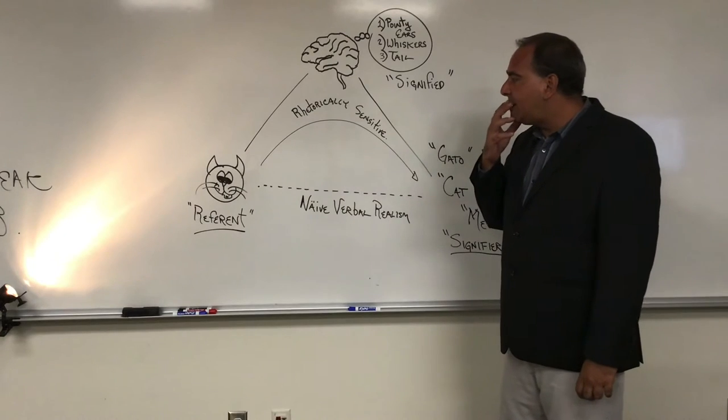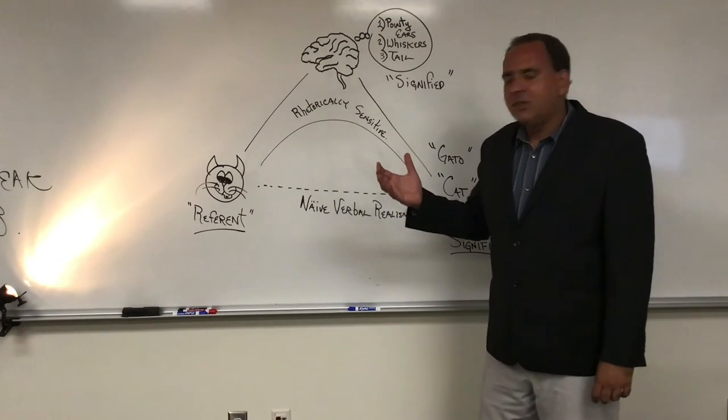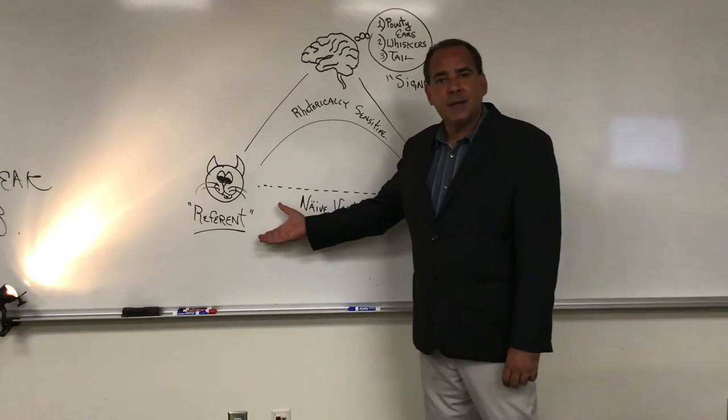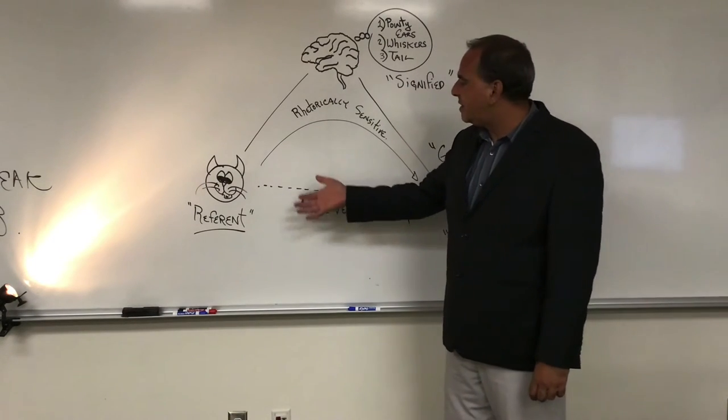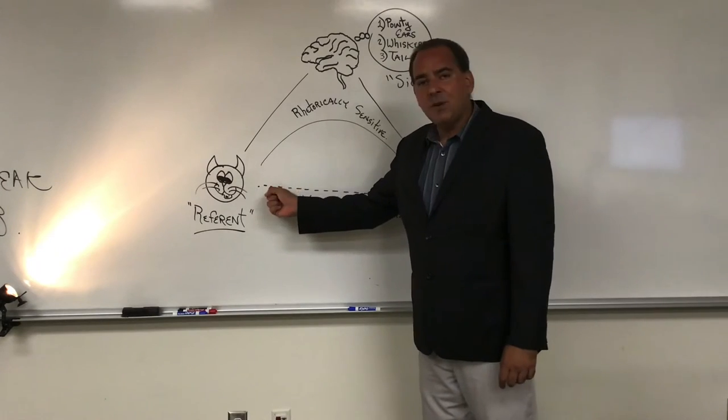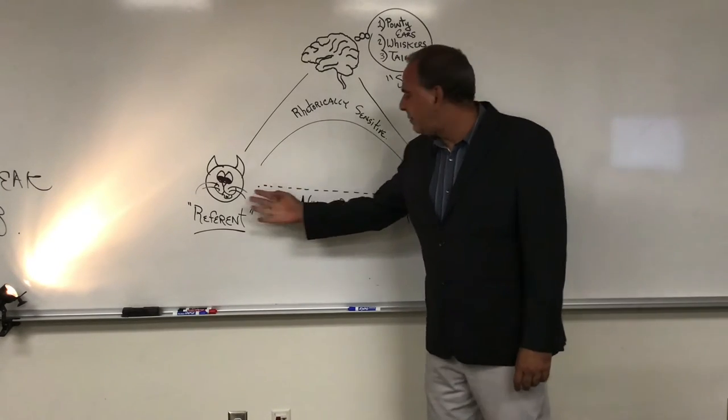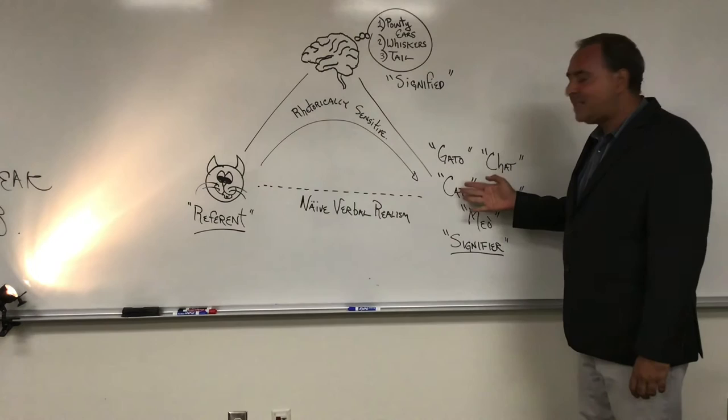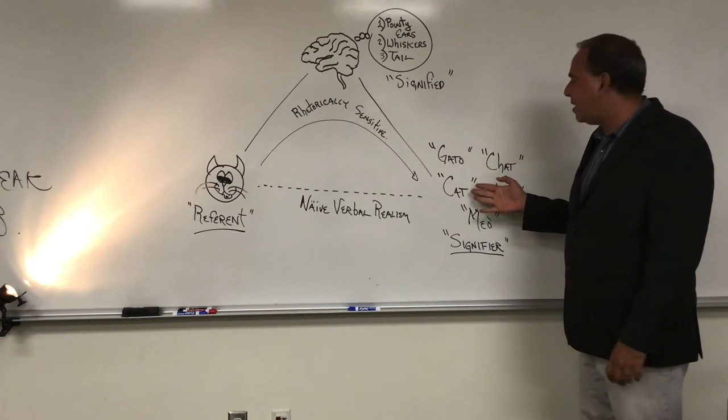According to them, there are objects in the real world. They call them reference, things that we refer to. In this particular situation, you have my crude representation or drawing of a cat. And most of us can say that's a cat. So we use a word, C-A-T, to describe what that object is.